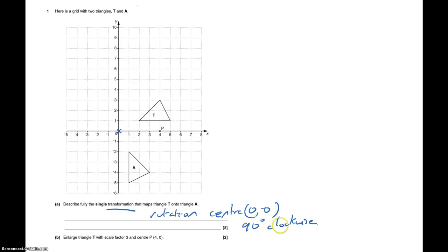And now in the second bit, you need to enlarge triangle T, the scale factor from P, from the points 4, 0.